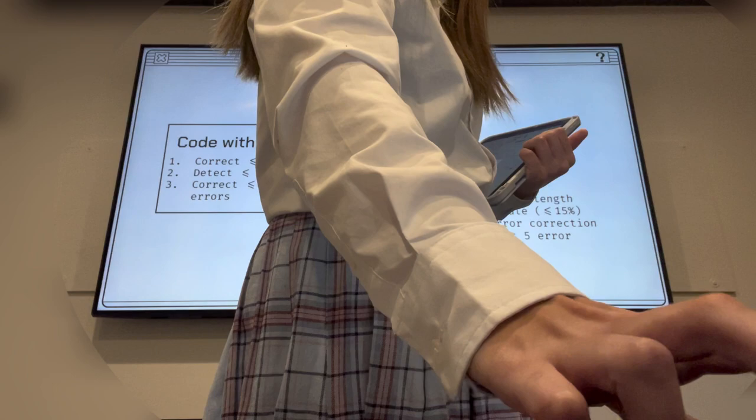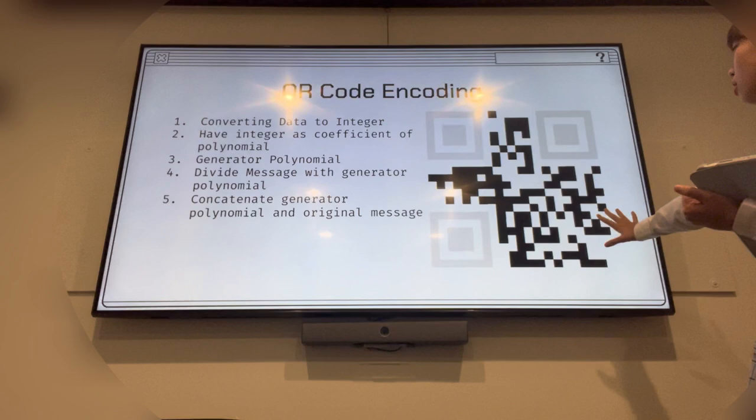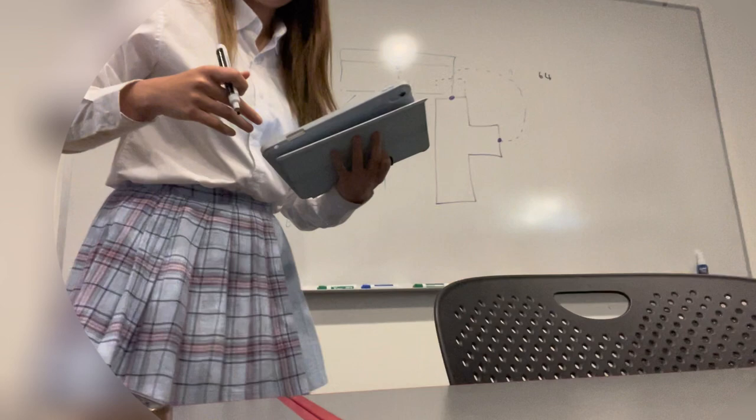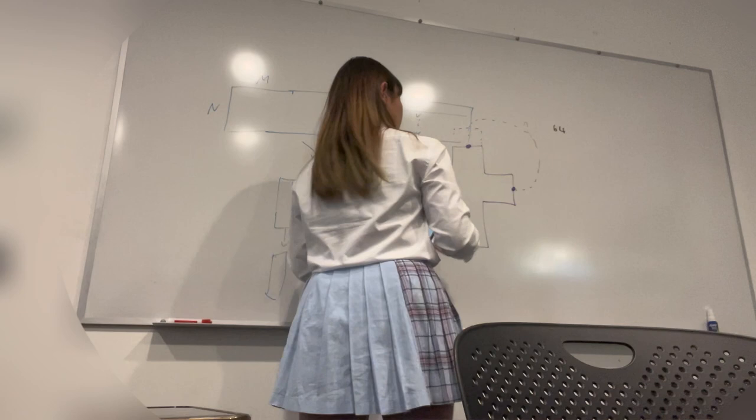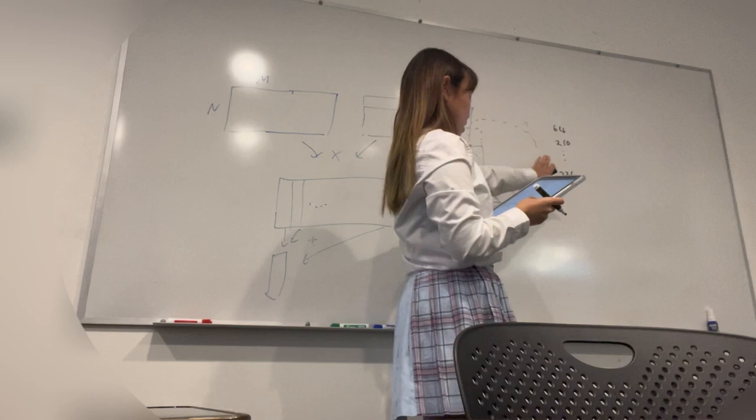So how do we encode this actual thing? First step is to convert data to integer. We have data of 64, 210, something, something, 236. It's from the QR code.